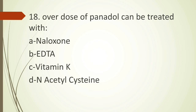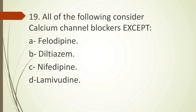Eighteenth question: overdose of Panadol can be treated with — option A naloxone, option B EDTA, option C vitamin K, option D N-acetylcysteine. Panadol is the brand name for paracetamol, and the antidote for paracetamol poisoning is N-acetylcysteine. The correct answer is option D, N-acetylcysteine. Note: naloxone is the antidote for opioid poisoning, EDTA is a chelating agent, and vitamin K is the antidote for warfarin.